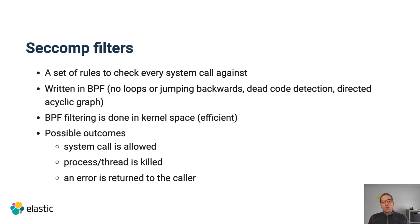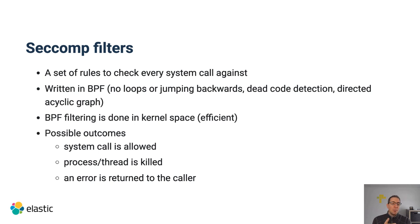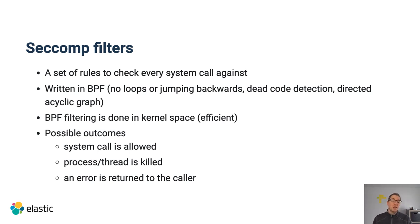With every check, you basically have a set of possible outcomes. The system call could be allowed. The process or the thread could be killed — you could kill the whole process or just the existing thread. Or you could just say: this is not allowed, but your application keeps running. This is, for example, what Elasticsearch is basically doing, because we want to make sure that Elasticsearch is still able to serve regular requests. But if there is a SecComp violation, we want to tell the user: look, something is fishy here, you're not allowed to do this.